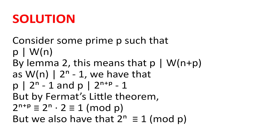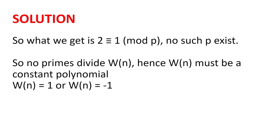On one hand, by Fermat's little theorem, 2^p is congruent to 2 modulo p, so 2^(n+p) is congruent to 2^n · 2 modulo p. But we also have that 2^n is congruent to 1 modulo p, since p divides 2^n - 1. So we get that 1 is congruent to 2^n · 2, which is congruent to 1 · 2, which is congruent to 2 mod p. So 2 is congruent to 1 mod p. But no such prime p exists.